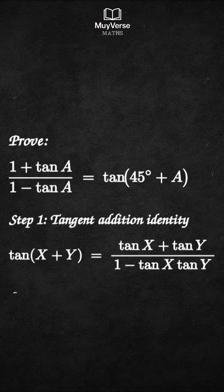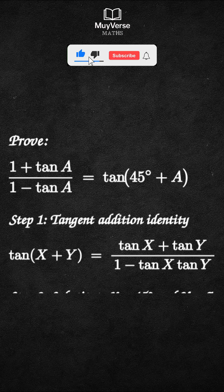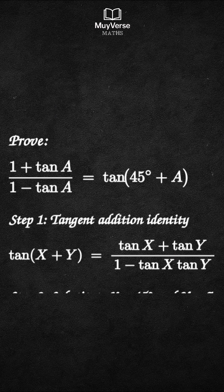Step 2. Substitute x equals 45 degrees and y equals a. We know tangent 45 degrees equals 1. Now write the identity with these values and then simplify the numerator and the denominator carefully.